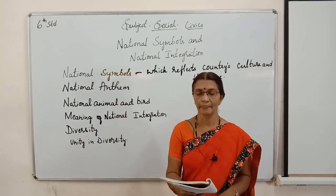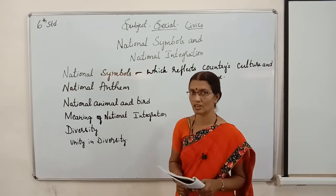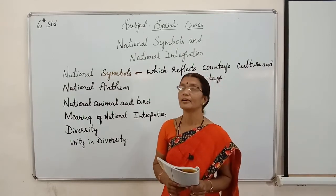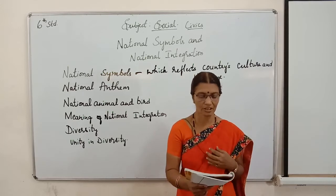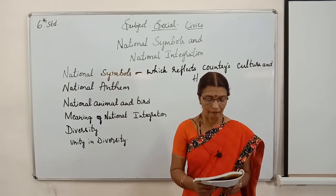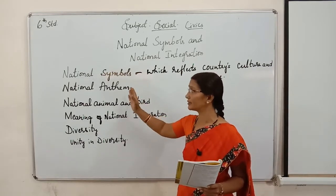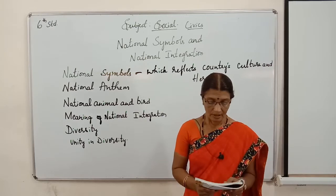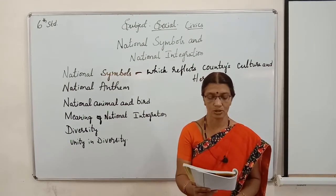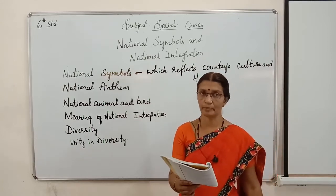Most importantly, the National Flag and National Emblem are the National Symbols. Our tricolour flag is our National Flag, and the National Emblem is the Four-Headed Lion. Every nation has its own National Anthem. Similarly, India also has its National Animal and National Bird. Tiger is the National Animal and Peacock is our National Bird.